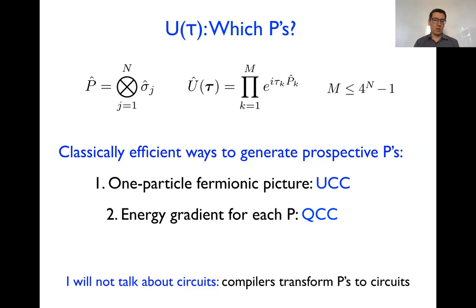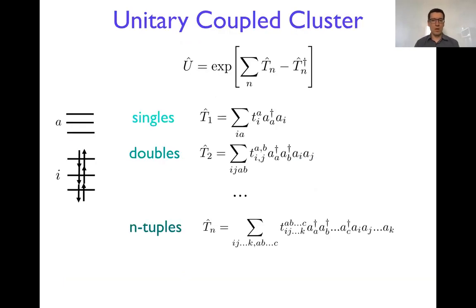The first path is using the fermionic picture, unitary coupled cluster theory. And the second one, energy gradients with respect to the tau amplitudes, has the name qubit coupled cluster theory. In this lecture, I will not talk about the circuits, how to generate the gates from the PKs. There are compilers for that, and that's kind of a relatively technical matter. That's why we are mainly focusing on what PKs should we choose.